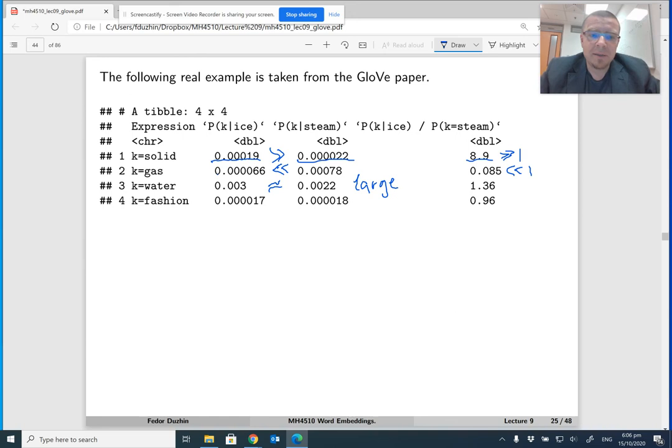Well, at the same time, the fourth row, so both of these numbers in the fourth row, they're small. Because the word fashion seldom appears in the context of ice and it seldom appears in the context of steam. But at the same time, the ratio, so they are also almost equal, which can be seen by the fact that these numbers, the ratios of probabilities are close to one.